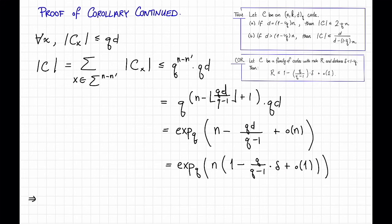Altogether, this implies that the rate r, which remember by definition is equal to the log base q of c divided by n, is at most this thing. 1 minus q divided by q minus 1 times delta plus a little o of 1. And that's what we wanted to show. So this proves this nice corollary to the Plotkin bound.